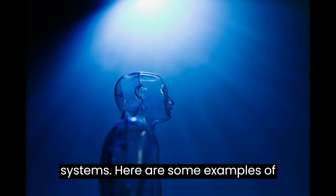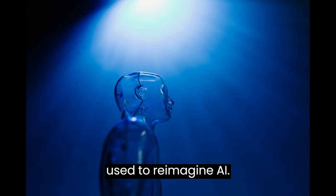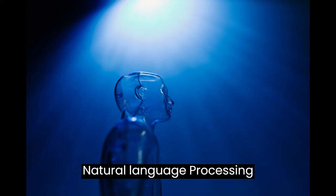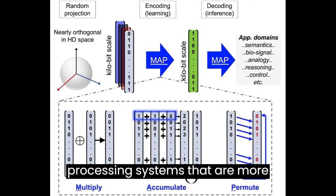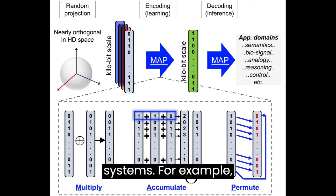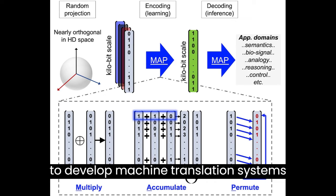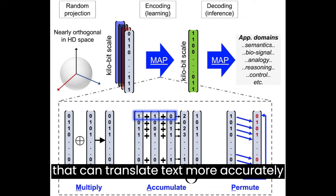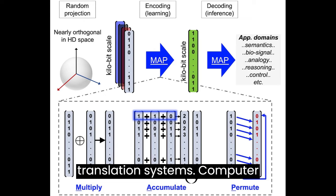Here are some examples of how hyperdimensional computing is being used to reimagine AI. In natural language processing, hyperdimensional computing is being used to develop new NLP systems that are more efficient and robust than existing systems. For example, it is being used to develop machine translation systems that can translate text more accurately and efficiently than traditional machine translation systems.